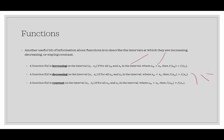A function f(x) is constant on an interval where, no matter what x value in that interval, the outputs are always the same. So it's going to be a horizontal segment or a horizontal line. When we list the intervals, we always use open parentheses — we never put anything in brackets. We're talking about open intervals here.